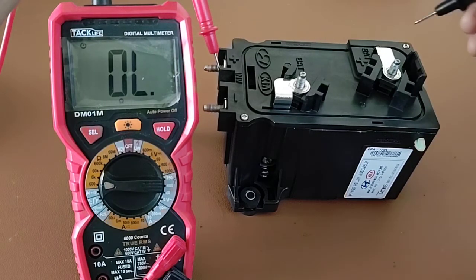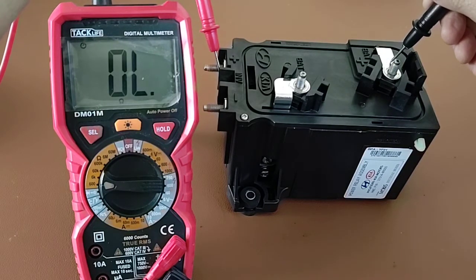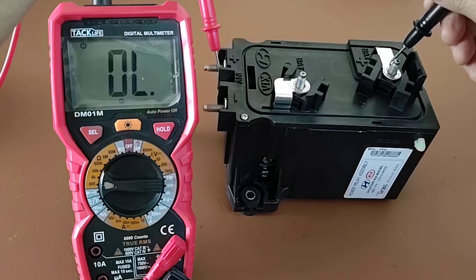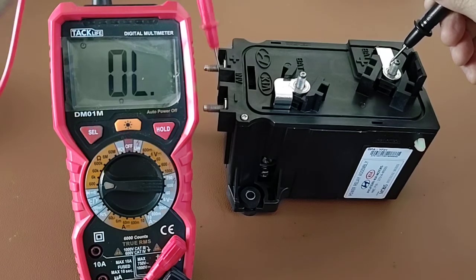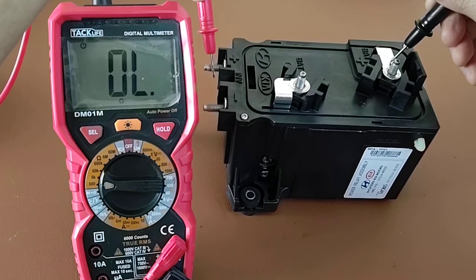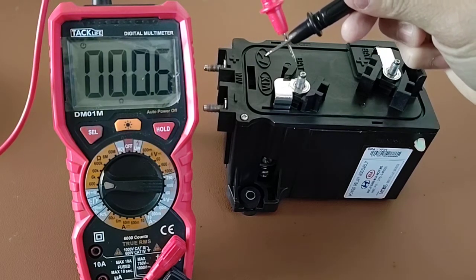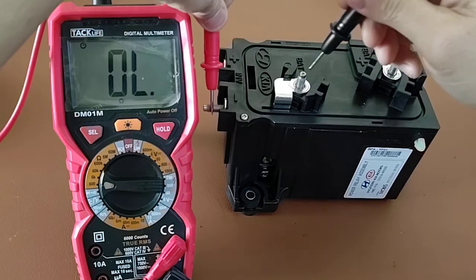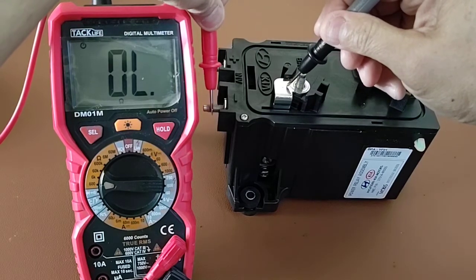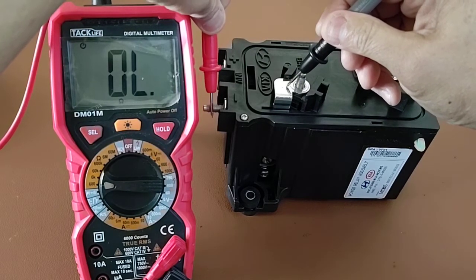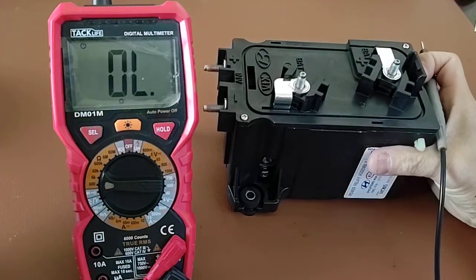As in the ohmmeter, again the ohmmeter is working. You can check the negative side too like that. You can even check the relay contact if you remove the bottom cover.